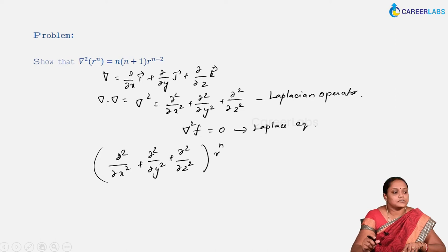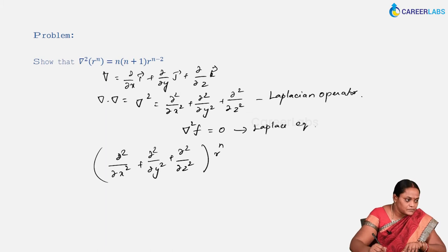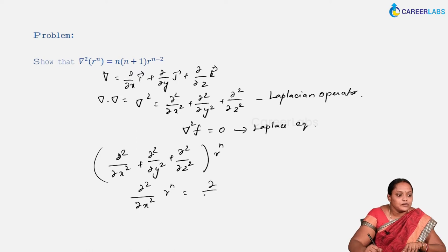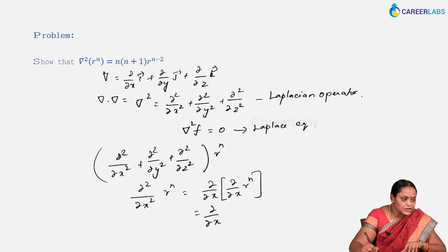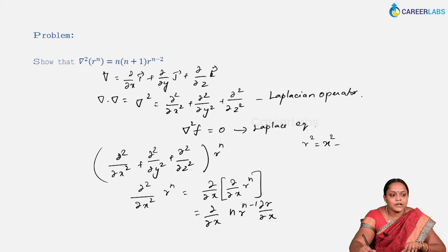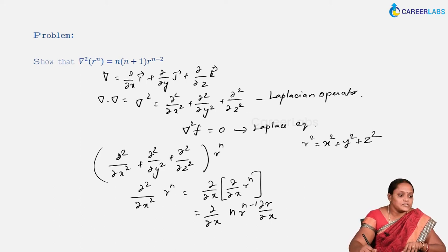First let us find what is ∂²/∂x² of r^n. Similarly, we can find for all the other remaining terms. This is nothing but ∂/∂x of (∂/∂x of r^n). Remember that r is always a function of x, y and z. When you differentiate r^n, this is n·r^(n-1) times ∂r/∂x.